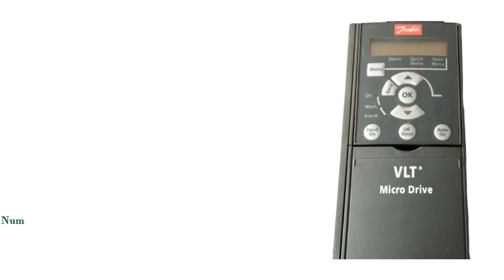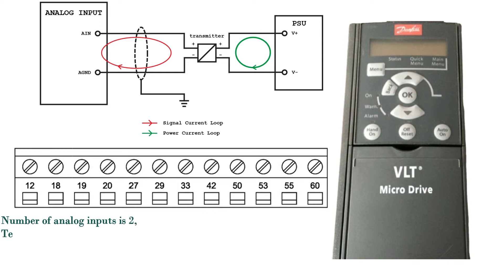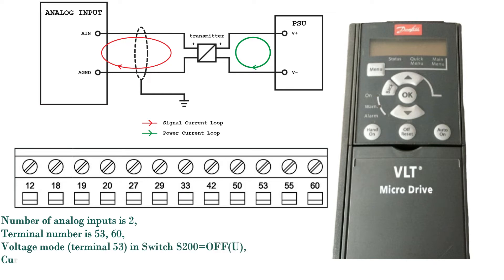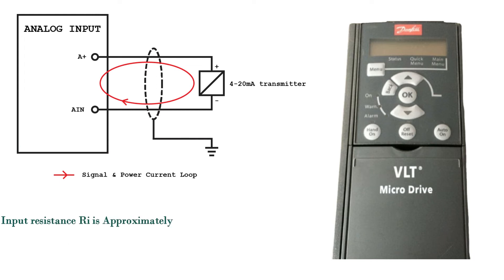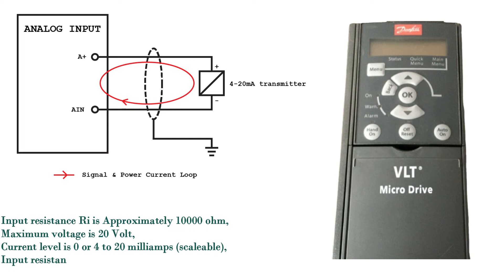Analog inputs: number of analog inputs is 2; terminal numbers are 53 and 60. Voltage mode: terminal 53, switch S200 = OFF (U). Current mode: terminals 53 and 60, switch S200 = ON (I). Voltage level is 0 to 10 volt; input resistance RIN approximately 10,000 ohm; maximum voltage is 20 volt. Current level is 0 or 4 to 20 milliamps, scalable; input resistance RIN approximately 200 ohm; maximum current is 30 milliamps.